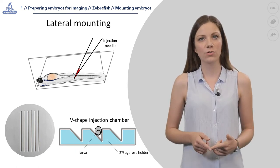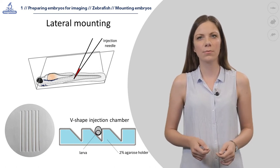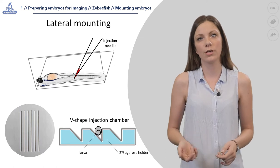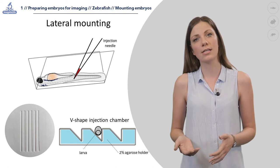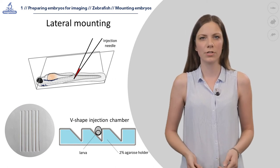Injections of bacteria, virus, or drugs in the blood circulation, muscle, or other parts of the few-day-old zebrafish larva are easiest if the larva is positioned on its side, which we call lateral orientation.